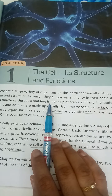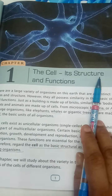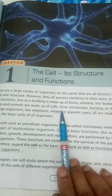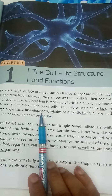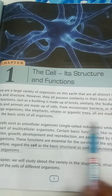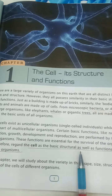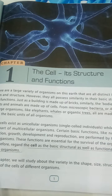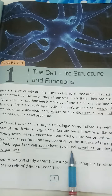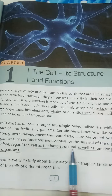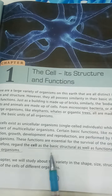Dear students, in 8th standard the first chapter in science is the cell — its structure and function. Here we will study that all living organisms, whether bacteria, amoeba, elephant, whale, or trees, are all made up of cells. We regard the cell as the basic structural as well as functional unit of all living organisms. It is called the structural unit because all living organisms are made up of cells.